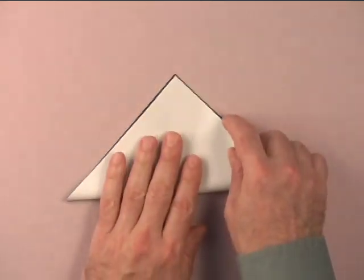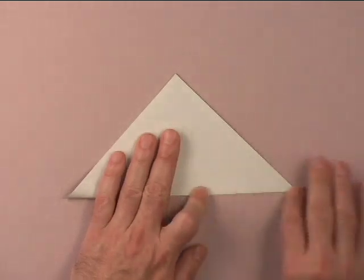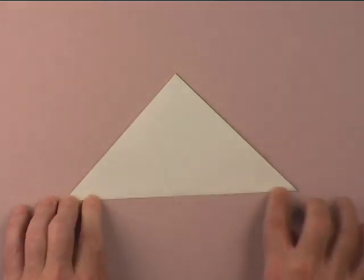Begin by folding in half corner to corner to make a white colored triangle. Here is an iceberg.